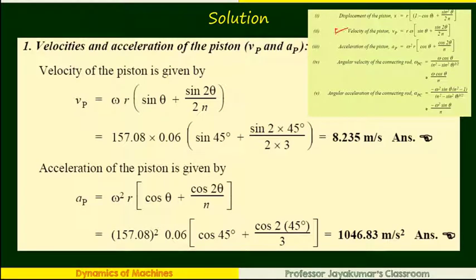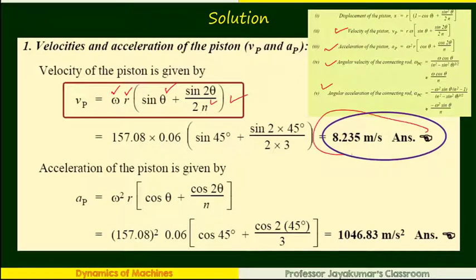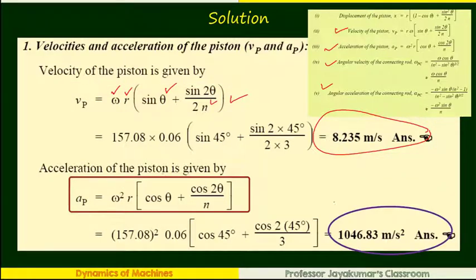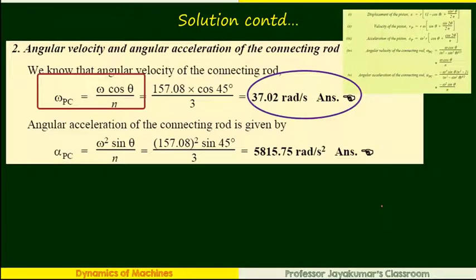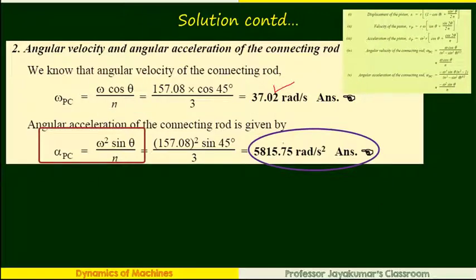These are the formula summary we have. We are going to merely substitute them. Omega equals 2 pi N by 60, radius given, theta known, n equals L by R known. All are known. Get the required answer. Same way, all are known for acceleration of the piston. This is the required answer. Same way, we can determine other values, namely angular velocity of the connecting rod and angular acceleration of the connecting rod. Mere substitution in the given or known expressions.